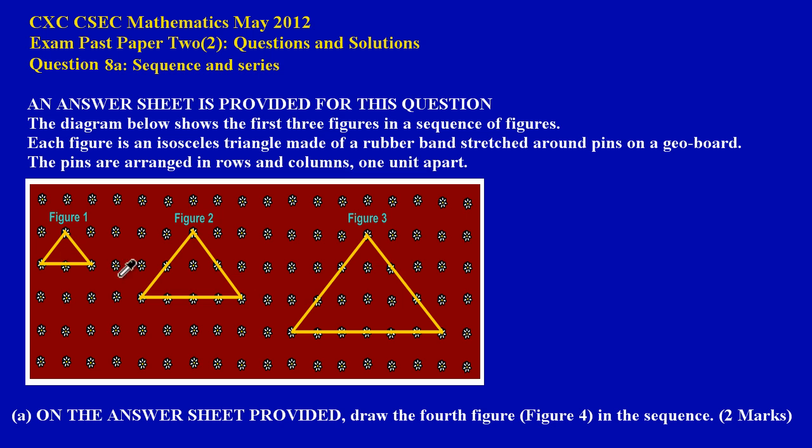Here we have the geoboard and here we have the diagrams. In part A they are asking us on the answer sheet provided, draw the fourth figure, figure four, in the sequence. That's an easy two marks. Now, first before we go ahead and draw the figure, remember please do not draw the fourth figure on this diagram. We're going to draw the fourth figure on the answer sheet provided.